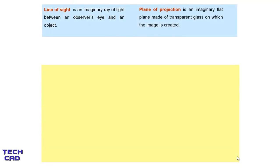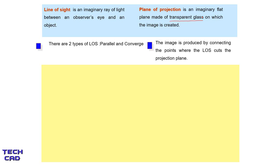What is line of sight? Line of sight is an imaginary ray of light between an observer's eye and an object. What is plane of projection? It is also an imaginary flat plane made of transparent glass. Please note it is a transparent glass on which the image is created. There are two types of lines of sight: first is parallel and another is converging line of sight. The image is produced by connecting the points where the line of sight cuts the plane of projection.